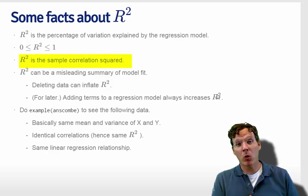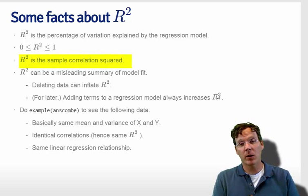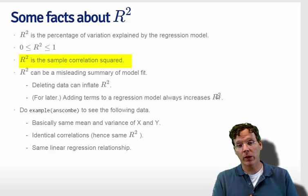If we define r as the sample correlation between the predictor and the outcome, then r squared is literally that sample correlation r squared.